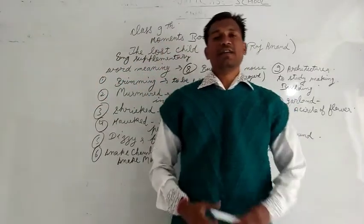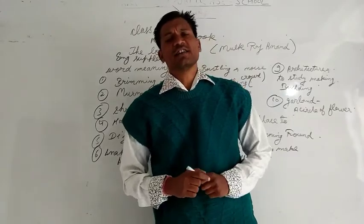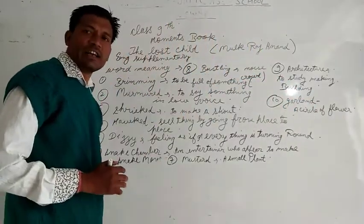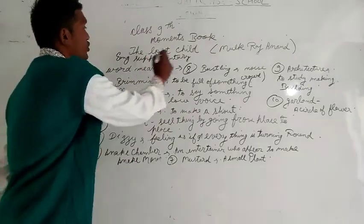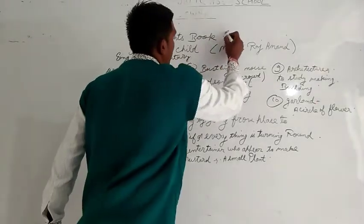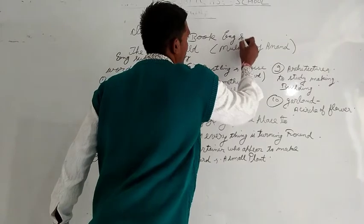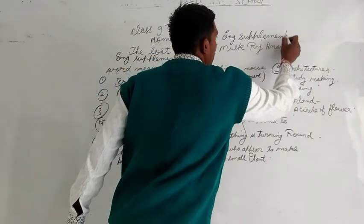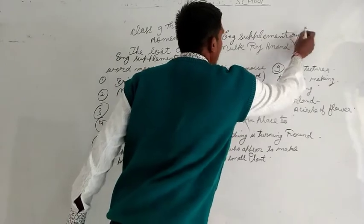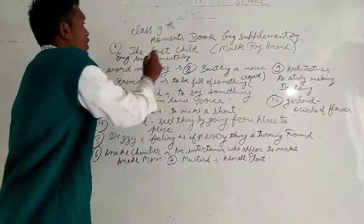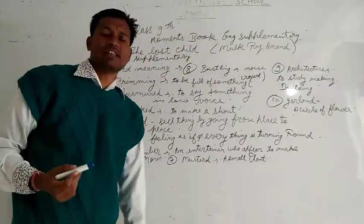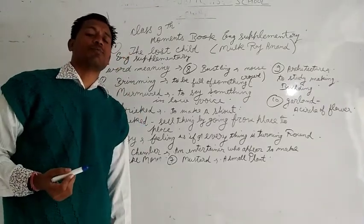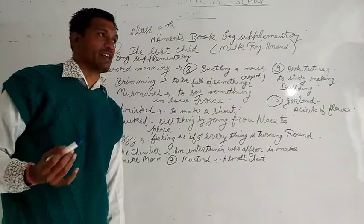Hello students, I am your class 9th teacher. Today we are going to see our literature English chapter, 'The Lost Child' from the English Supplementary Reader. We are going to take chapter number 1, that is The Lost Child. The name itself says that one child who is lost in a fair, and whatever problem he is facing has been discussed.